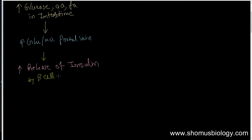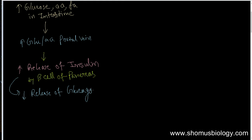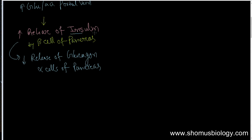Insulin is released by the beta cells of the pancreas. This increased level of insulin also inhibits or decreases the release of glucagon from the alpha cells of the pancreas. So once insulin concentration increases, glucagon concentration falls — insulin and glucagon work oppositely to one another.